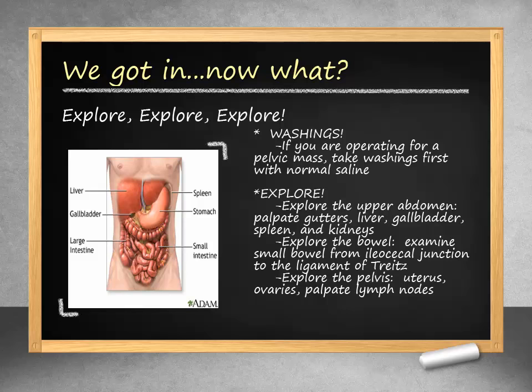We now have an adequate incision. In the case of a pelvic mass or any concerns for malignancy, pelvic washings with normal saline should be obtained. Next is the most important step that should not be forgotten: exploration. This should be done in a systematic fashion with exploration first of the upper abdomen, followed by running of the bowel, and finally exploration of the pelvis.